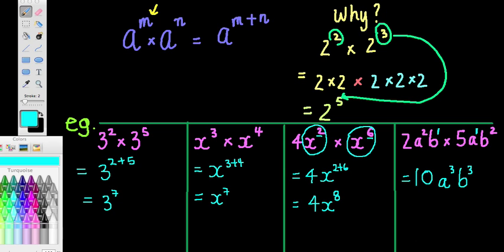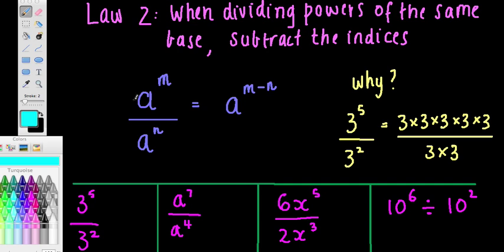Let's look at law 2. This is working in an opposite fashion to law 1. When dividing powers of the same base we subtract the indices. Before we were multiplying and adding; now we're dividing and subtracting. The general form is: a to the power of m divided by a to the power of n equals a to the power of m minus n. The base is the same — that is really important. If things are not the same base we cannot use this law.